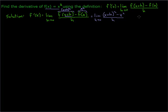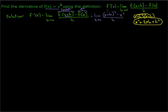Now here we want to square x plus h. I realize this is algebra, but a lot of times the algebra is what gets calculus students in hot water. So x times x is x squared, then x times h is xh, plus h times x gives us 2xh, and then plus h squared. So this is our x plus h quantity squared.